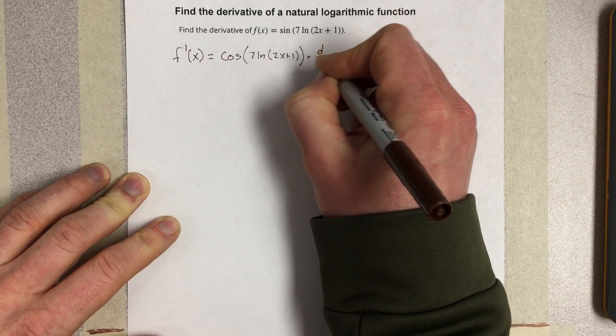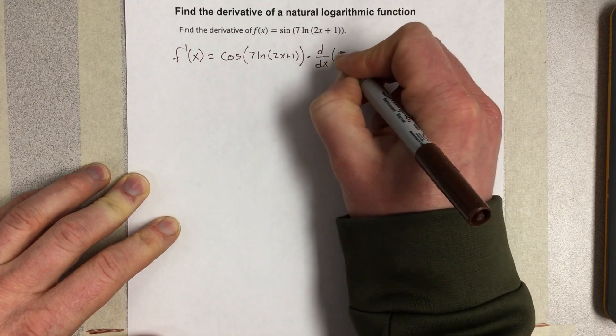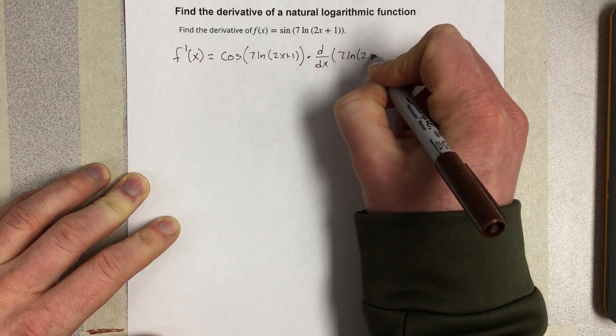times the derivative of the inside, which would be 7*ln(2x+1).